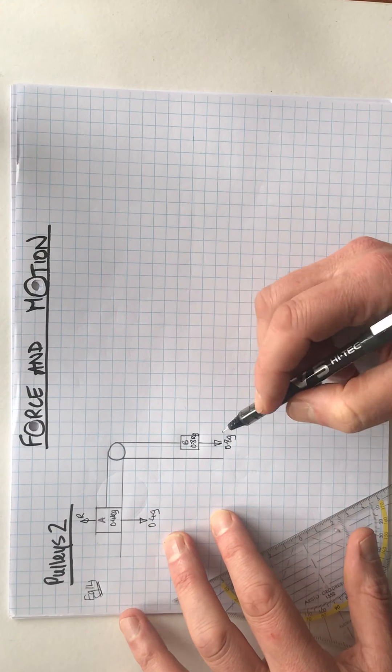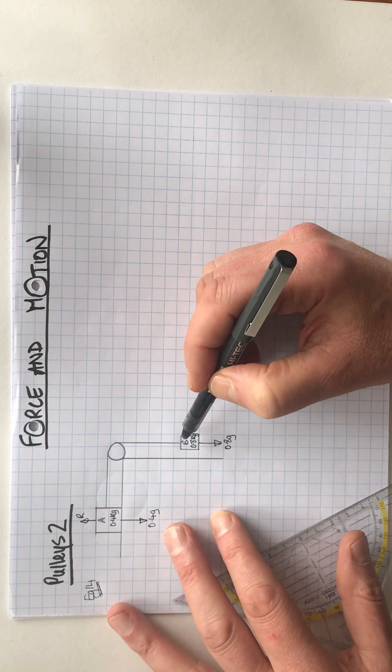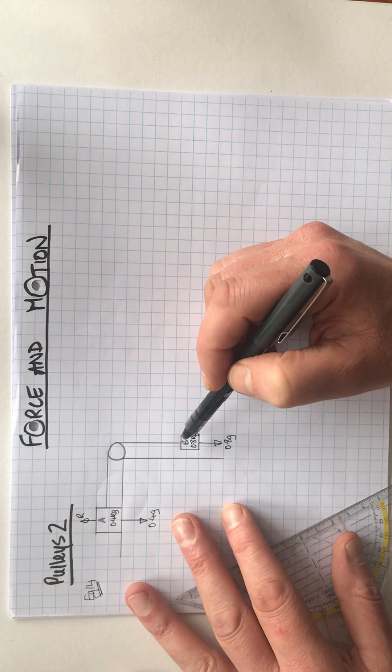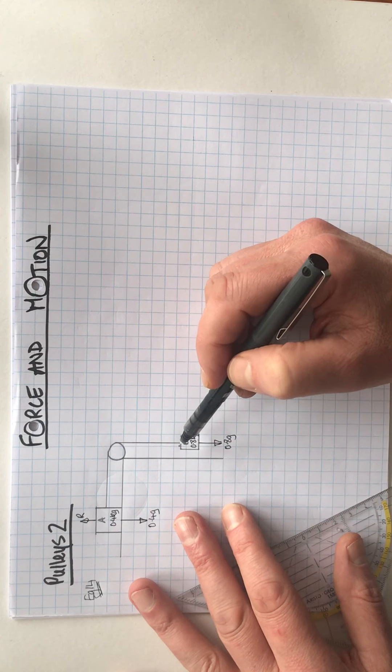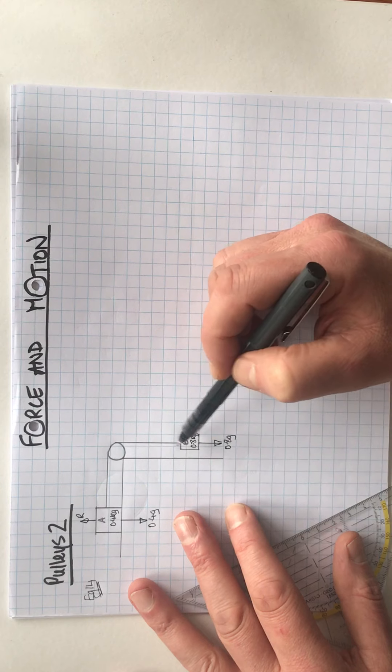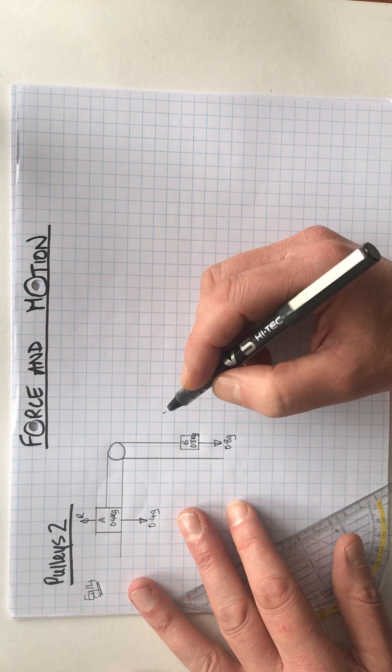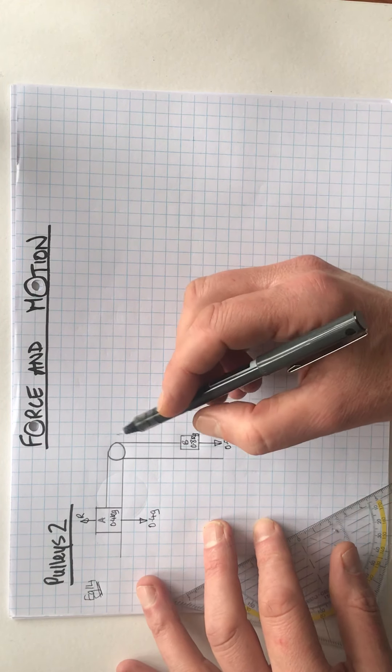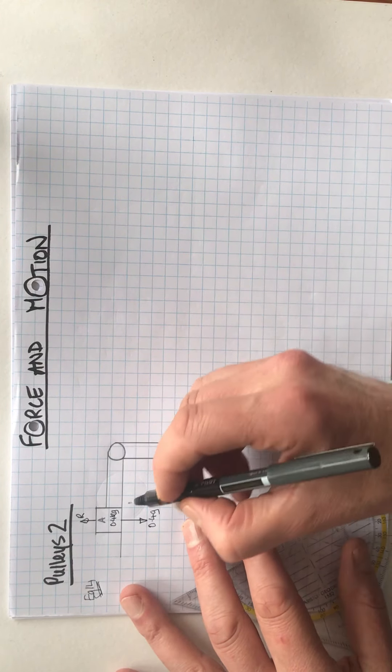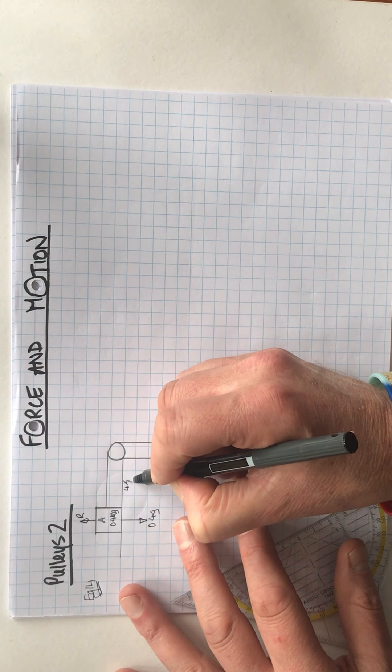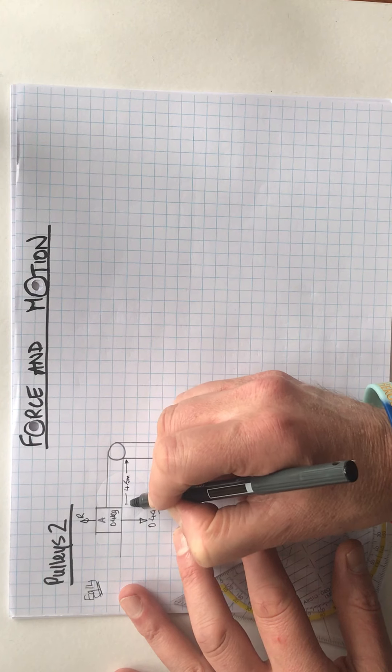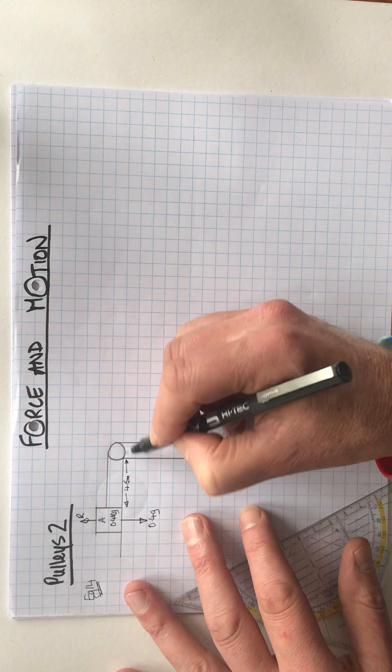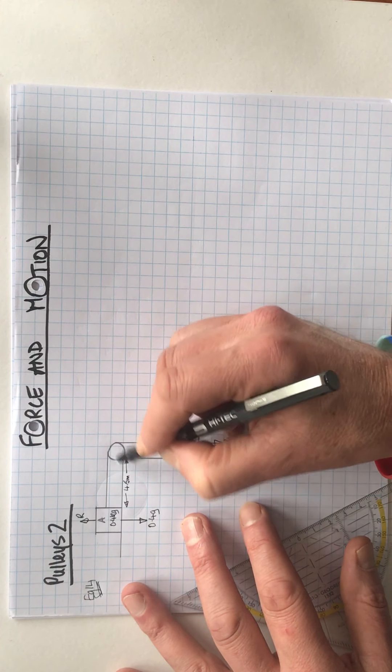This is 0.8 kilograms, so we need one of our force arrows coming down here, 0.8g, g being 9.8 as ever. They're connected by a light, inextensible string, so we don't need to take the weight of the string into account. And it doesn't stretch, so the tension presumably in the string at all points is going to be the same.